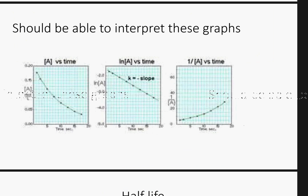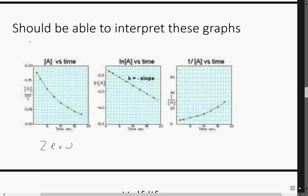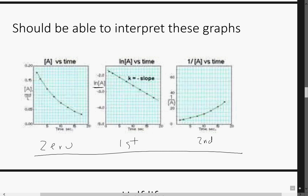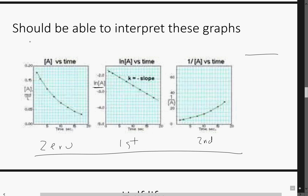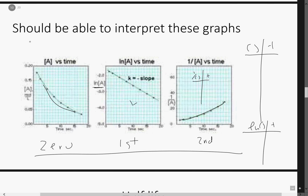These are the graphs — you can test yourself as far as what they mean. Concentration versus time: this would be zero order. Natural log of concentration versus time: this is first order. One over concentration versus time: this is second order. What you would do is plot all three of these. The one that gives you the straight line is the one that actually represents that relationship. So you take a data point with concentration and time. Because these first two graphs are curved and this one is straight, that means the data is actually representing a first order relationship.